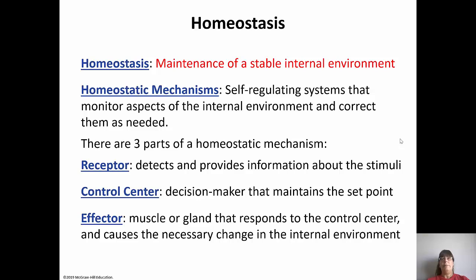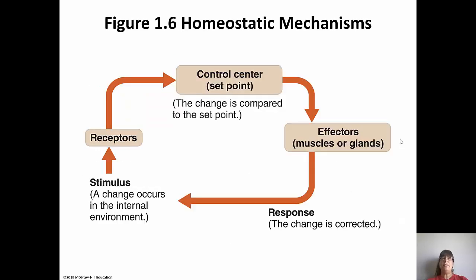For example, if our temperature goes up, receptors detect that increase and send the information to the control center. The control center then sends a decision to the effectors - in this case our sweat glands - to start sweating so we can cool our bodies down and return to the normal range. So the flow is: stimulus, change occurs, receptors pick it up, send information to the control center, control center sends a decision to the effector, and the effector responds to bring conditions back to normal.